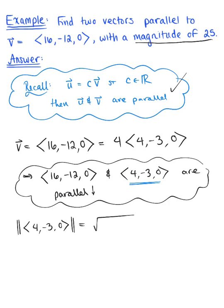So this gives us the square root of 4 squared, plus negative 3 squared, plus 0 squared. And so this leaves us with the square root of 16 plus 9. Oh, how convenient. So we have the square root of 25, which leaves us with 5. So this vector 4, minus 3, 0, has a magnitude of 5.